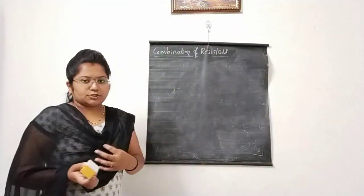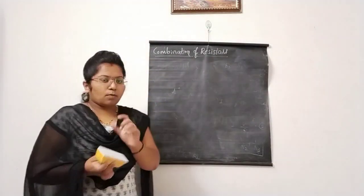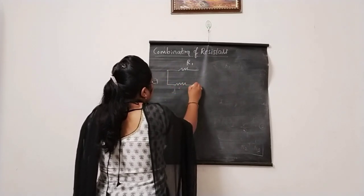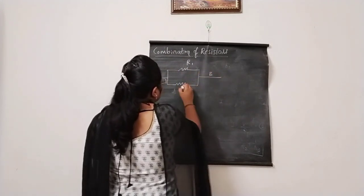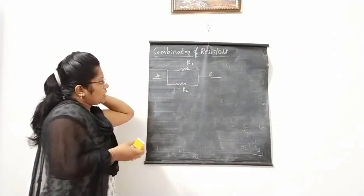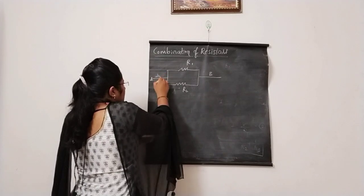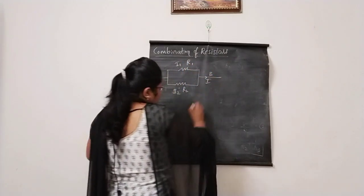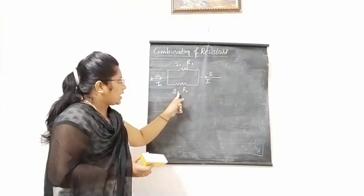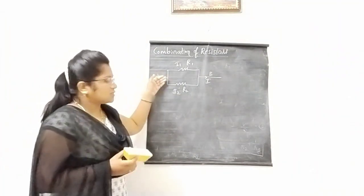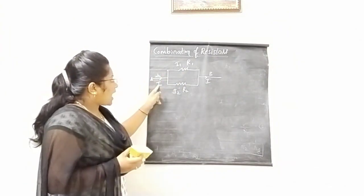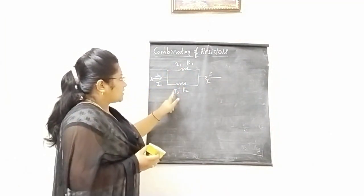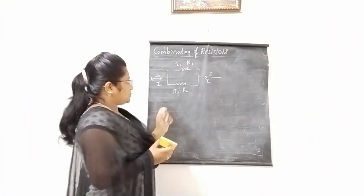We can also write the difference between series and parallel combinations. In series: end-to-end connection, I is the same, V is different, RS = R1 + R2 + R3. In parallel: connected between two common points, V is the same, I is different, and 1/RP = 1/R1 + 1/R2 + 1/R3. One more point for the parallel combination: consider R1 and R2 connected between common points A and B. The main current I divides into branch currents I1 and I2, and recombines after the combination.